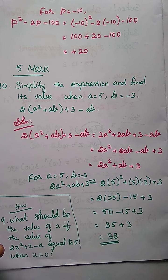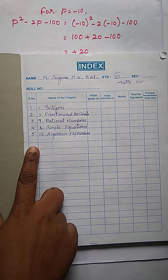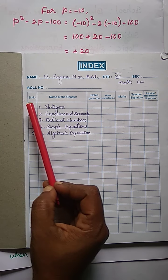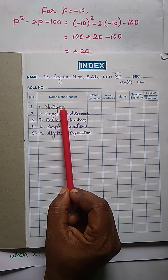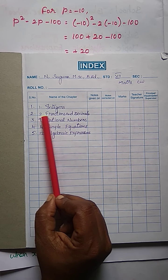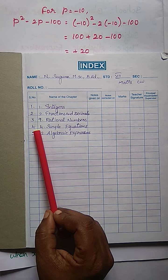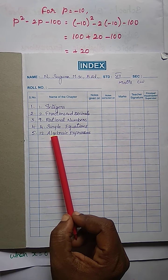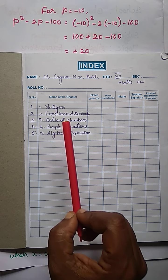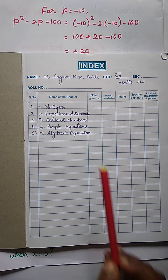Students, see your classwork index page. This is your classwork. In your classwork index page, we have completed 5 units. In the first unit, write serial numbers 1, 2, 3, 4, 5. In the first unit, the chapter number is 1 — integers. Second unit: fractions and decimals. Third unit, chapter number 9: rational numbers. Fourth unit: simple equations. Fifth unit, chapter number 12: algebraic expressions. You write like this in your classwork index page. You no need to write the date and all. Fill this very neatly. Thank you, students.